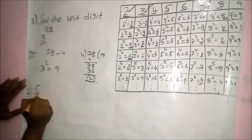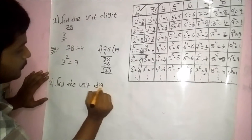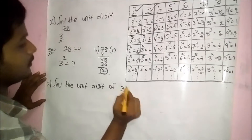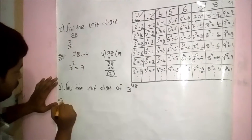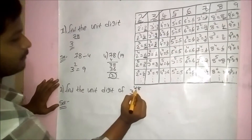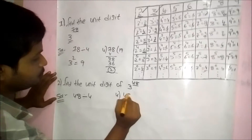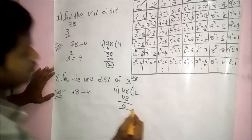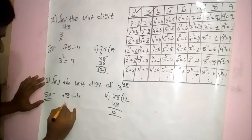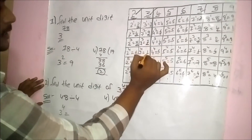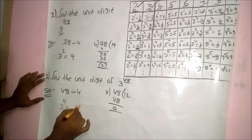Second problem: find the unit digit of 3 power 48. Divide 48 by 4: remainder is 0. If remainder is 0, replace the power with 4: 3 power 4 — according to the table, unit digit is 1. So if remainder is 0, the answer for base 3 is always 1.